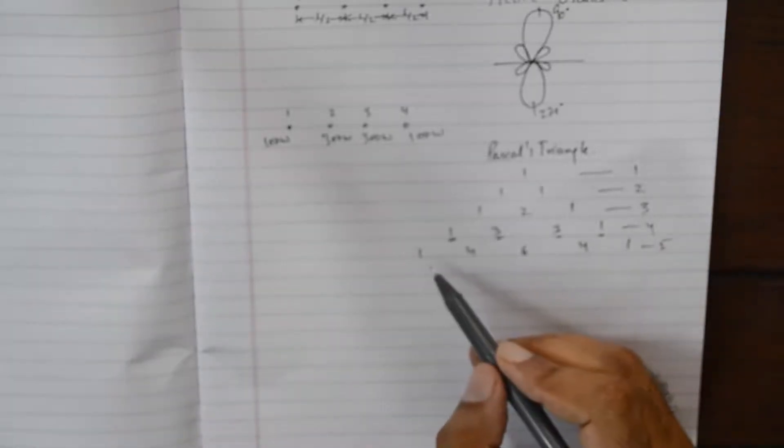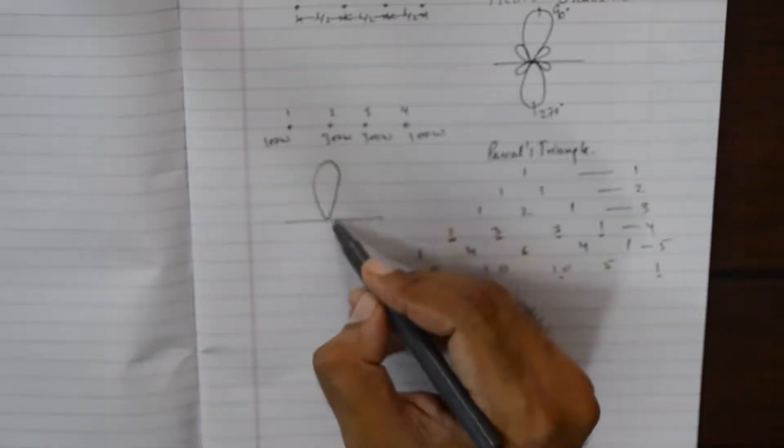As we increase the number of elements, there is a huge mismatch of energy difference. For example, if we go on to make a six element array, you can see the difference between the element at the extreme end and the element right in the center is almost ten times, so that difference becomes unmanageable at times. But the best part is in binomial array we get the radiation pattern to be absolutely free of side lobes.